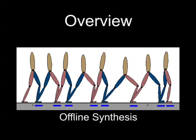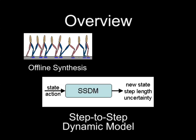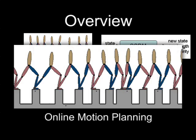We begin by generating physically feasible solutions to a series of example problems using offline optimization. We use these solutions to build an approximate step-to-step dynamic model that is then used for online motion planning and control.